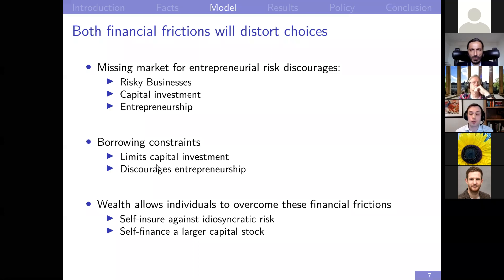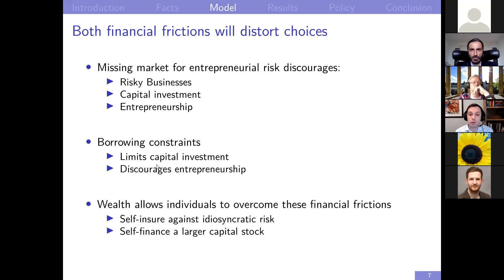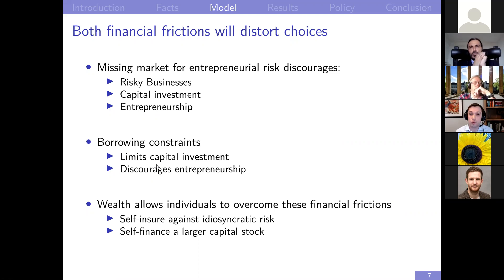The main mechanisms: both financial frictions distort individual choices. The missing market for entrepreneurial risk discourages individuals from starting higher-risk, higher-expected-productivity businesses, from investing in a large amount of capital, and from selecting into entrepreneurship relative to being a worker. Borrowing constraints limit how much capital individuals can invest in, and by limiting entrepreneurial income, they also discourage entry into entrepreneurship. Wealth plays a really important role in this model, allowing individuals to overcome both financial frictions — to self-insure against idiosyncratic risk and to self-finance a larger capital stock.